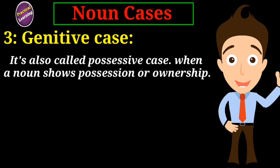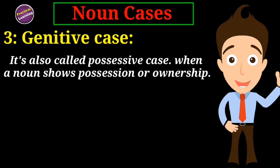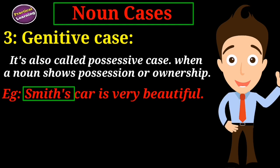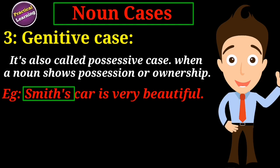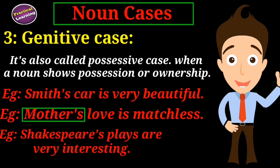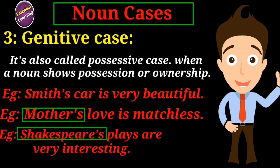Genitive case. The genitive case of a noun is also called the possessive case. When a noun is used in such a way that shows possession or ownership, it is the genitive or possessive case. For example, 'Smith's car is very beautiful.' The noun Smith with apostrophe-S shows possession because the car belongs to him. More examples: 'Mother's love is matchless' and 'Shakespeare's plays are very interesting.' These show possession, so they are genitive cases of a noun.